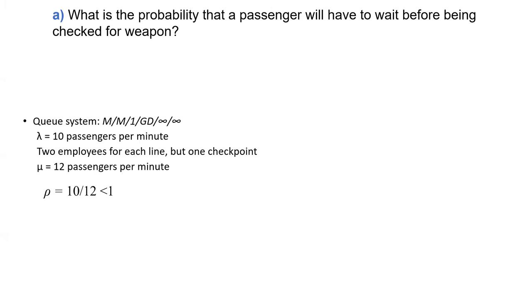Now the first question: What is the probability that a passenger will have to wait before being checked? Probabilities are associated with pi's. They'll have to wait when there is someone in the system already. It's one minus pi zero. Pi zero is the only time the passenger won't wait. The probability they have to wait is one minus pi zero. Pi zero is 1 minus rho, so that gives me 5 over 6.